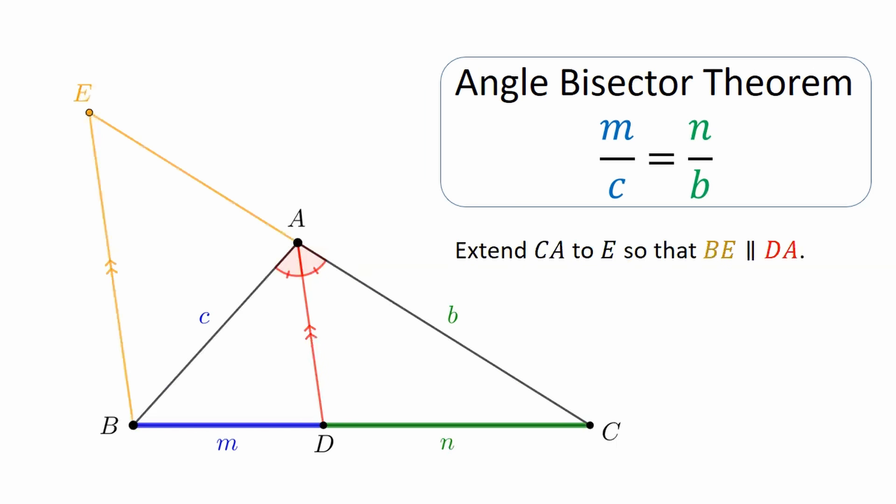Here's a proof. Extend CA up to a point E, up to where? Up to that location so that the segment BE that's formed and the angle bisector DA are parallel. The arrowheads in the figure denote this parallelism. Now, because of that, the angles marked in green, angles CAD and AEB are corresponding angles, so they are congruent. But not only that. The angles now marked in blue, angles DAB and ABE are alternate interior angles courtesy of the transversal AB. So, they are equal too.